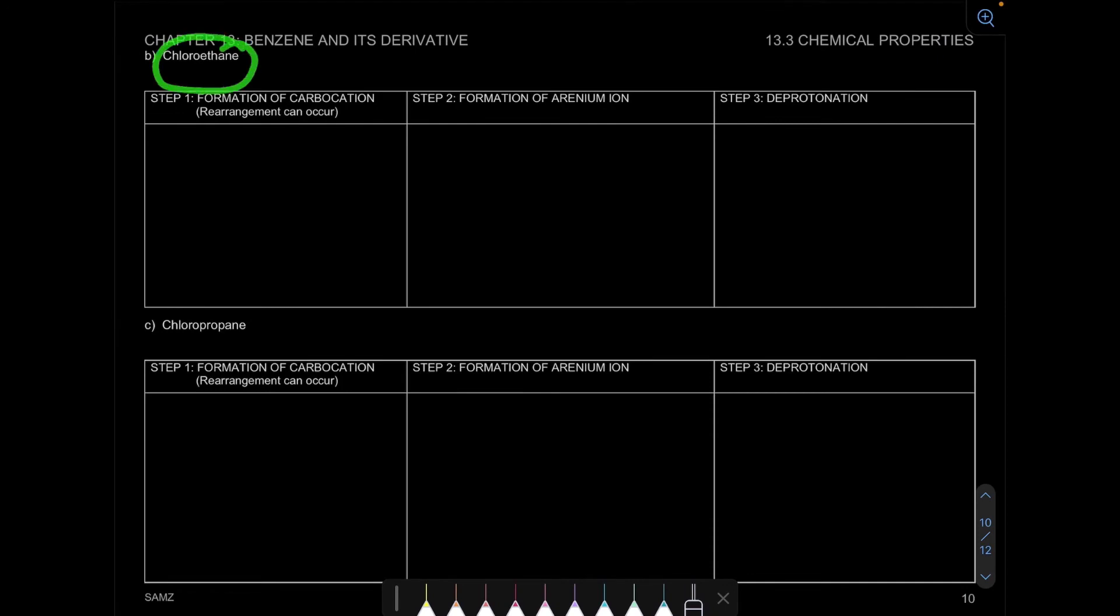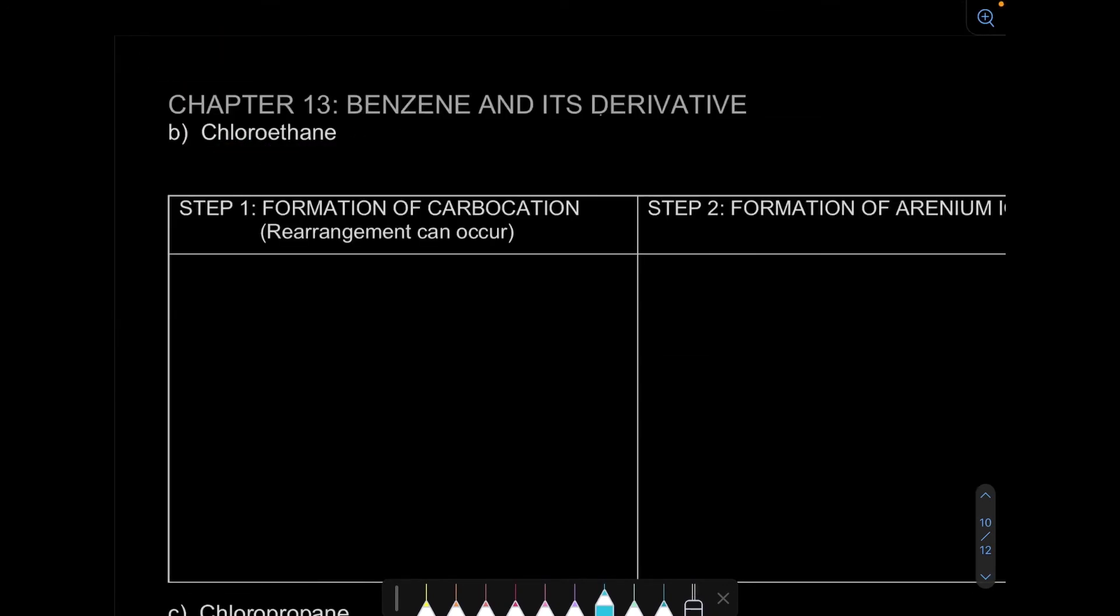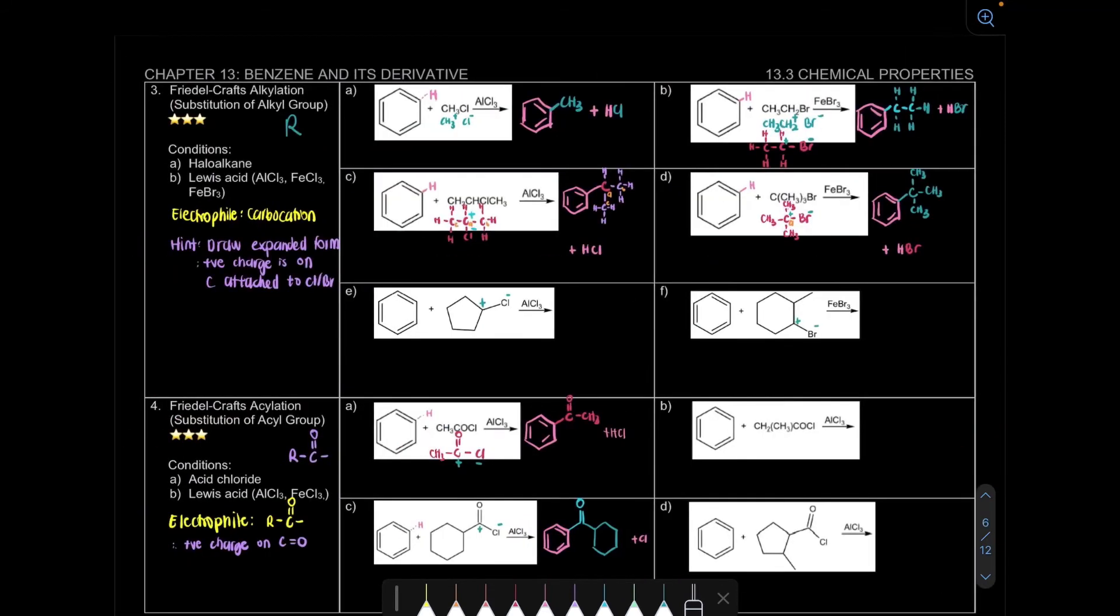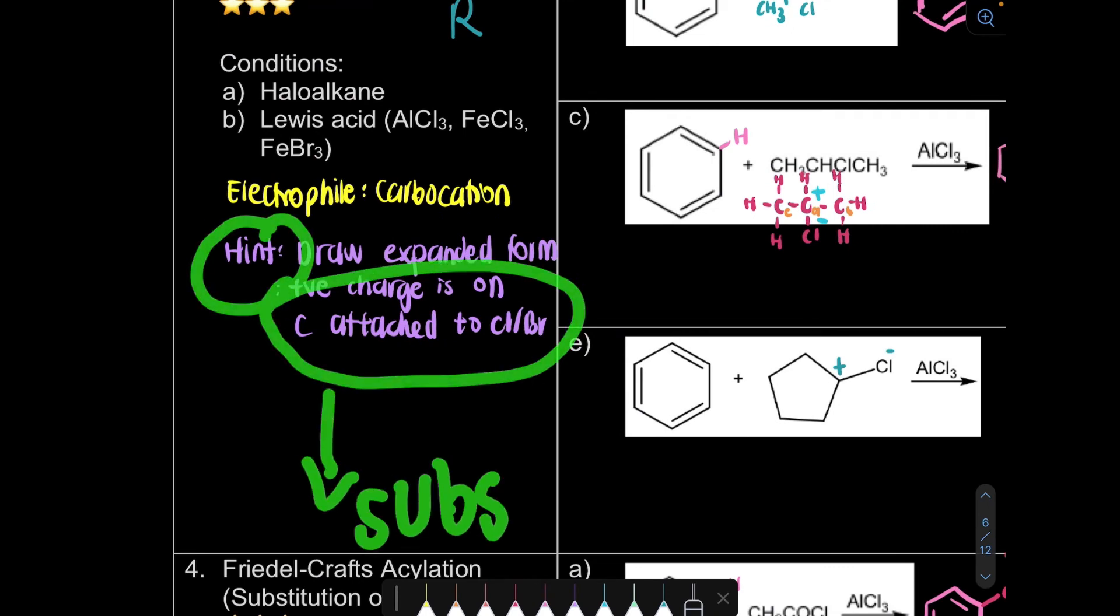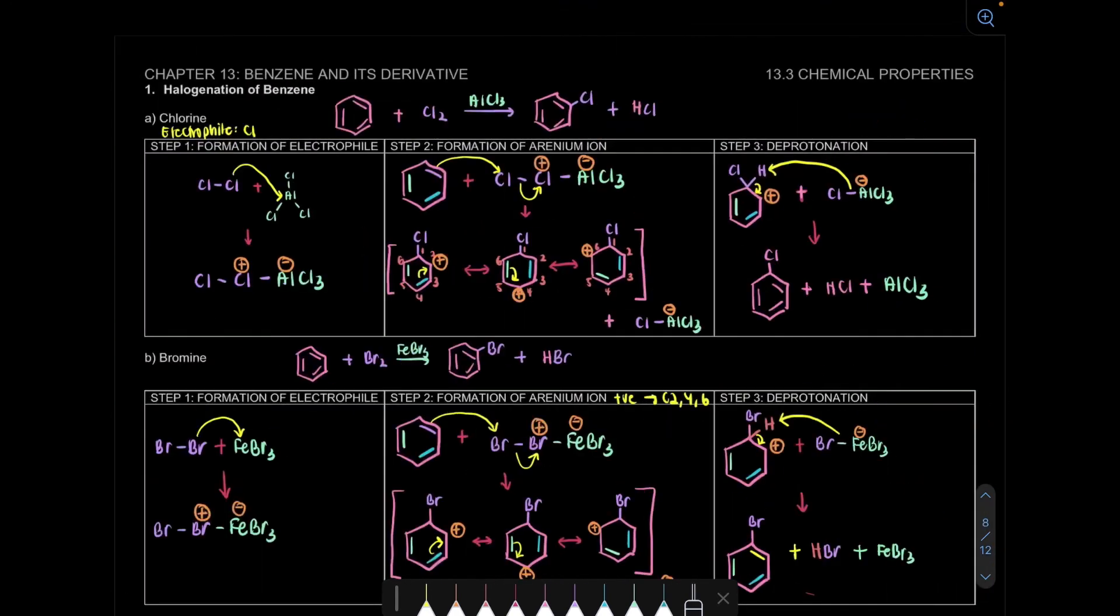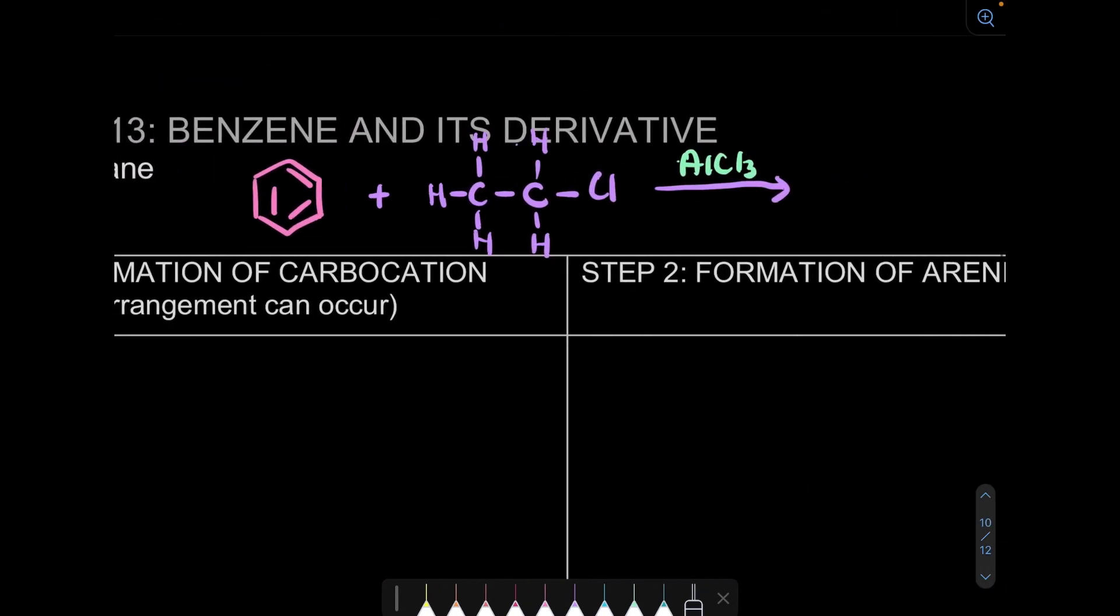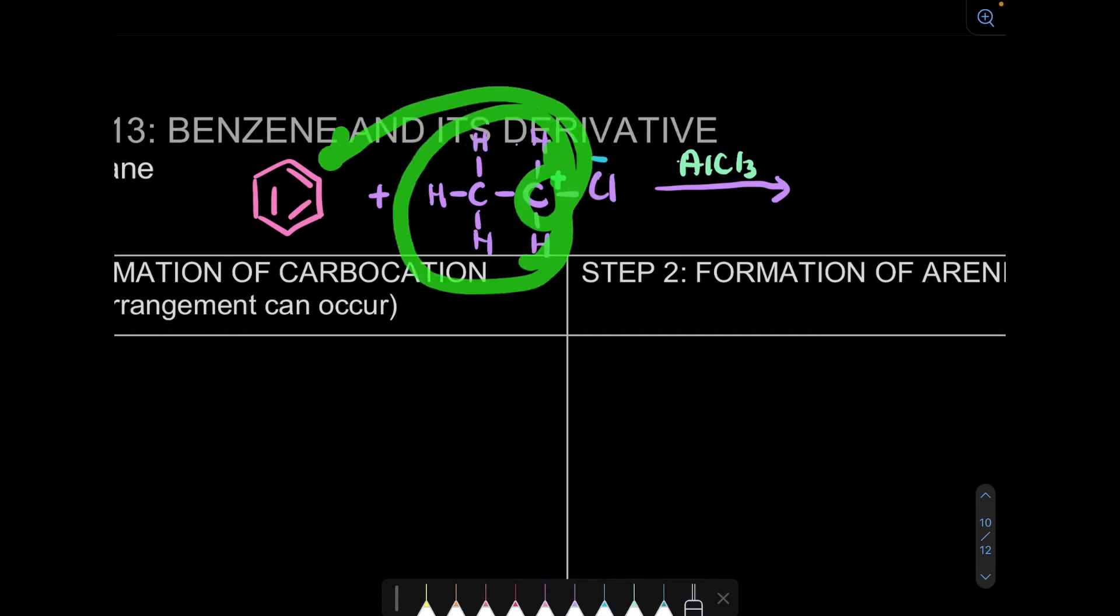Now, let's look at the next page with chloroethane. For chloroethane, it means we're going to react benzene with how many carbons? We have 2 carbons. Make sure each carbon has 4 bonds. So one of it we will put our chlorine. Don't forget we need our Lewis acid catalyst. We need to put positive charge and negative charge. Positive charge is on the carbon attached to Cl or Br. So that one we will substitute.